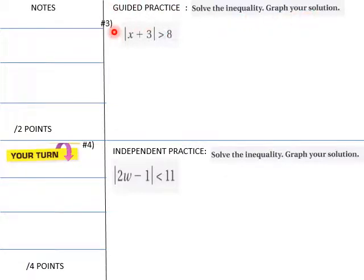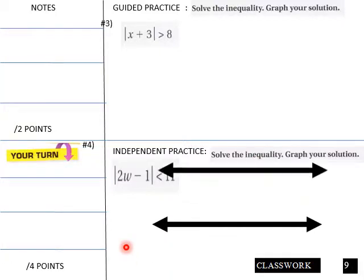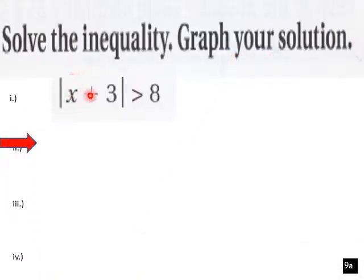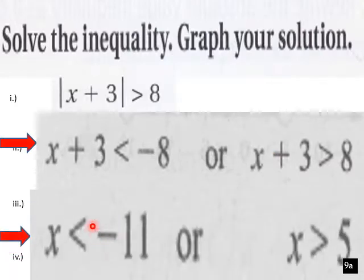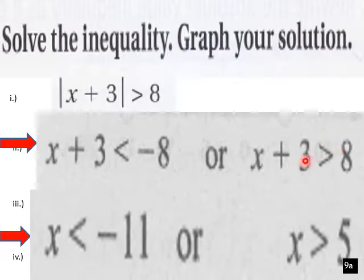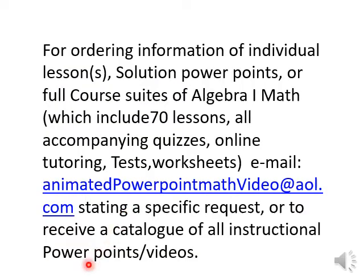Guided practice: solve the inequality and graph your solution. |x + 3| greater than 8. Students, this is yours: |2w minus 1| less than 11 — graph your solution. For |x + 3| > 8, we write x + 3 less than negative 8 or x + 3 greater than 8, giving x less than negative 11 or x greater than 5. Here are the number lines for your graphs.